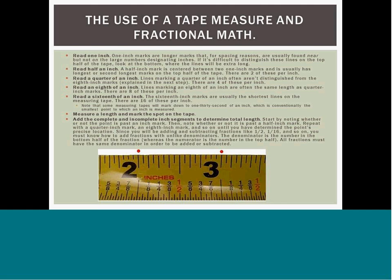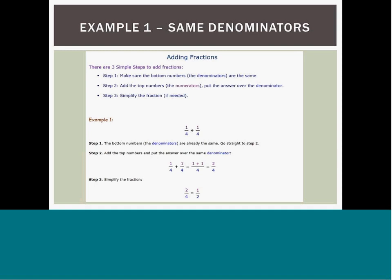Place the end of the tape at one end of the object to be measured, and then mark the spot on the tape at the far end of the object. Read the whole number first, then determine the fraction precisely. You will need to know how to add fractions with like and unlike denominators. There are three basic steps to adding fractions with common denominators: first, verify the bottom numbers, or denominators, of the fractions are the same; second, add the numerators and put them over the same denominator as seen in step 2 of the slide; finally, simplify the fraction as seen in step 3 of the slide.